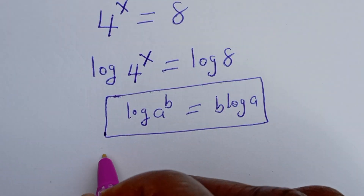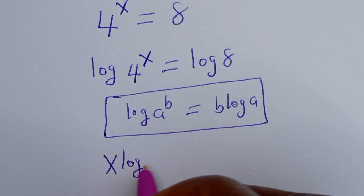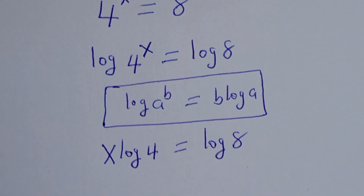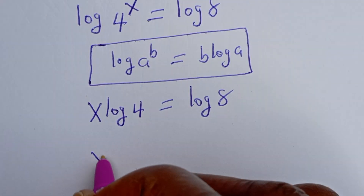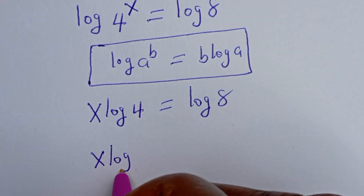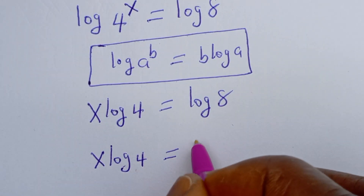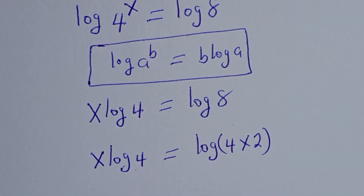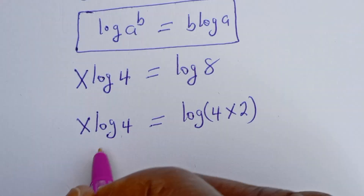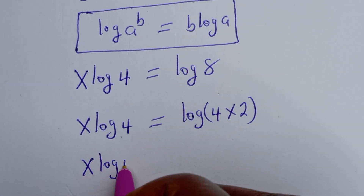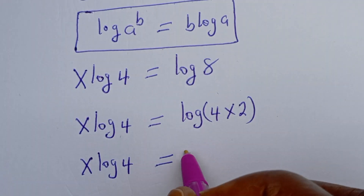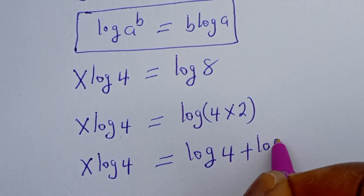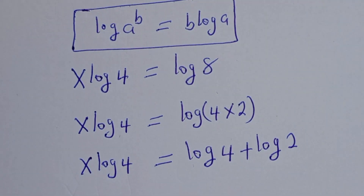So log 4 to the power of s can be written as s times log 4, which is equal to log 8. Now log 8 can be written as log of 4 multiplied by 2, which expands to log 4 plus log 2.